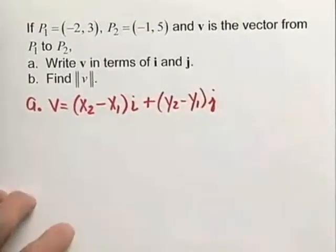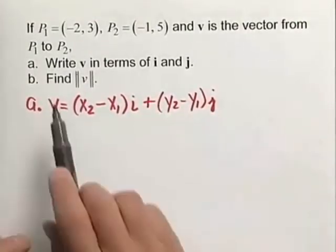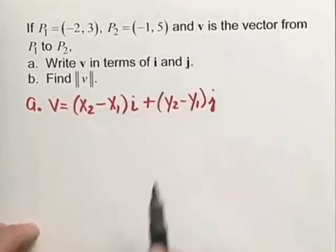and V is the vector from P1 to P2, we want to write V in terms of i and j, or as a linear combination of i and j, and then we want to find the magnitude of that vector.